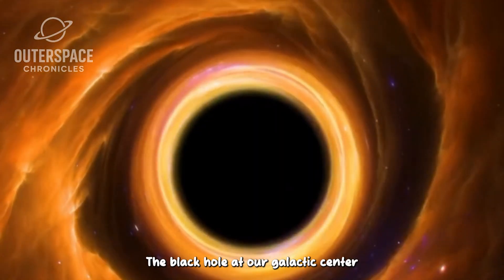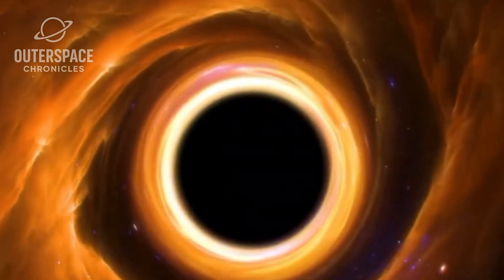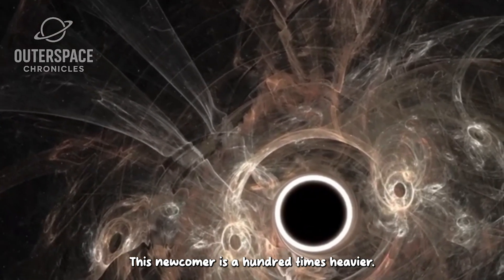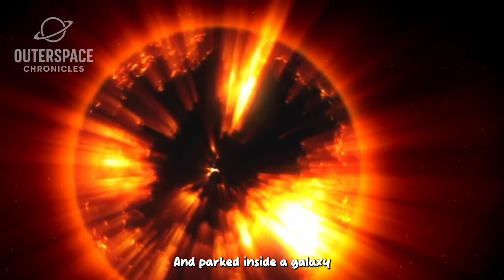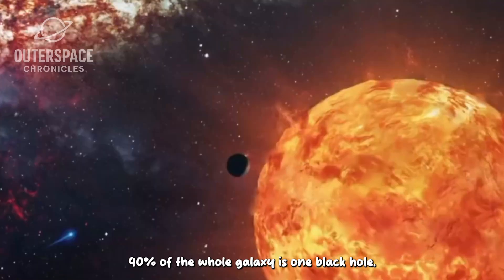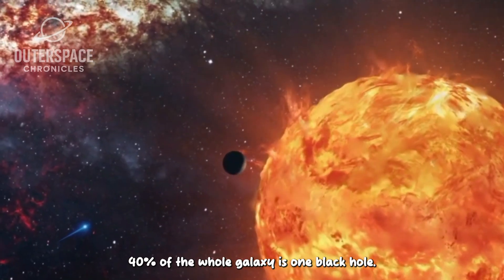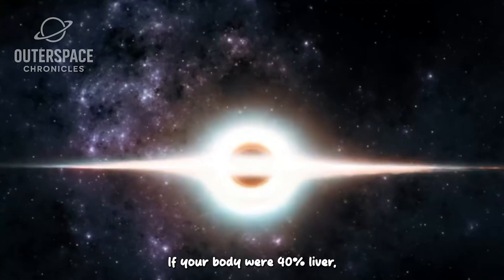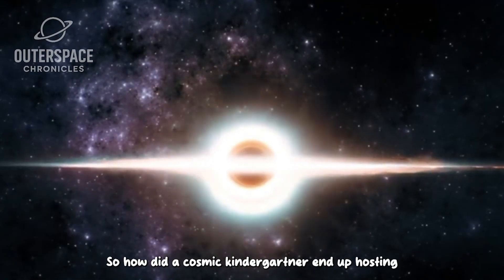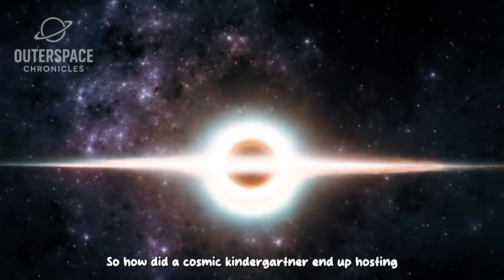Sagittarius A star, the black hole at our galactic center, is 4 million suns. This newcomer is 100 times heavier and parked inside a galaxy 1 thirtieth the Milky Way's mass. 40% of the whole galaxy is one black hole. If your body were 40% liver, you'd look like a biology experiment. So how did a cosmic kindergartner end up hosting a sumo wrestler?